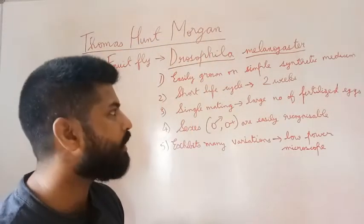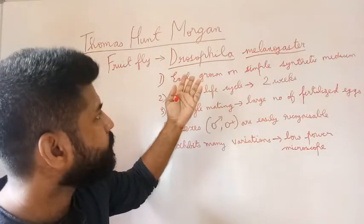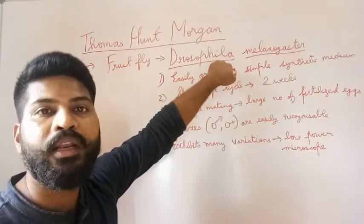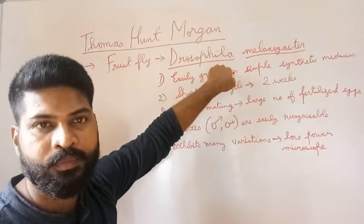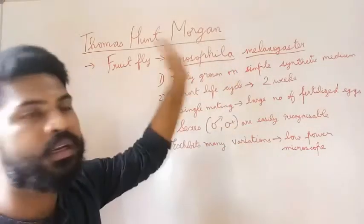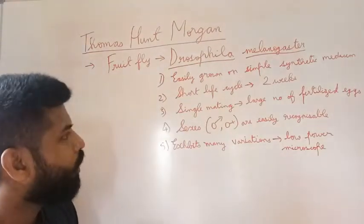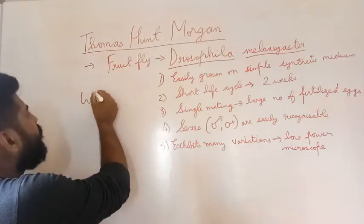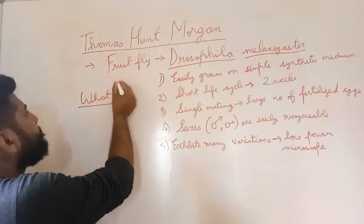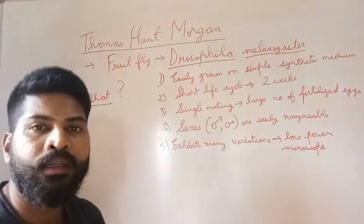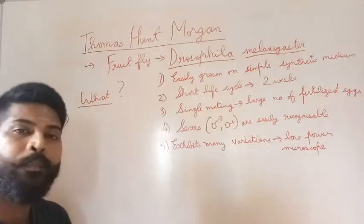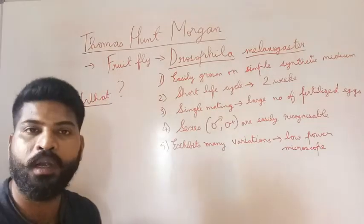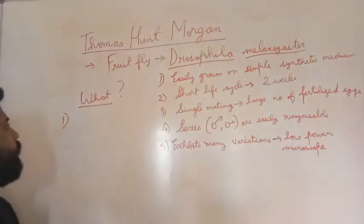Drosophila melanogaster is also called the central organism of genetics because it is used almost everywhere in genetics. Thomas Hunt Morgan was interested in studying Mendel's laws of inheritance, so he did experiments similar to what Mendel did.